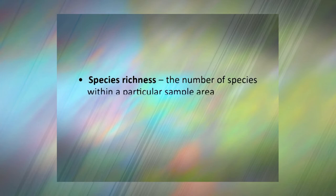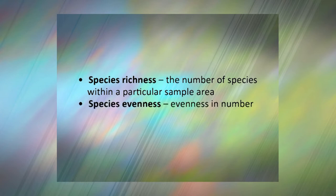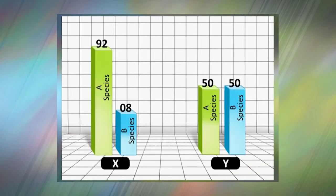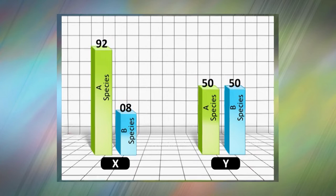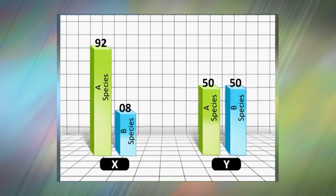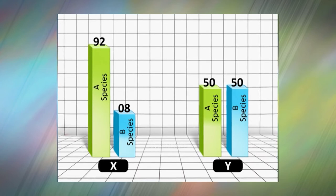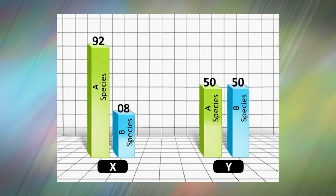Species diversity may be measured using the following characteristics: first, species richness — the number of species within a particular sample area — and species evenness, which refers to the evenness in number of individuals of each species in the area. For example, for two sample areas X and Y with two species A and B: in X, there are 92 individuals of species A and only 8 of species B, while in Y there are 50 individuals of each species. If species richness only was used to account for species diversity in X, the diversity might seem lower than Y, although both have the same number of species, because almost all individuals encountered would be from only one species.